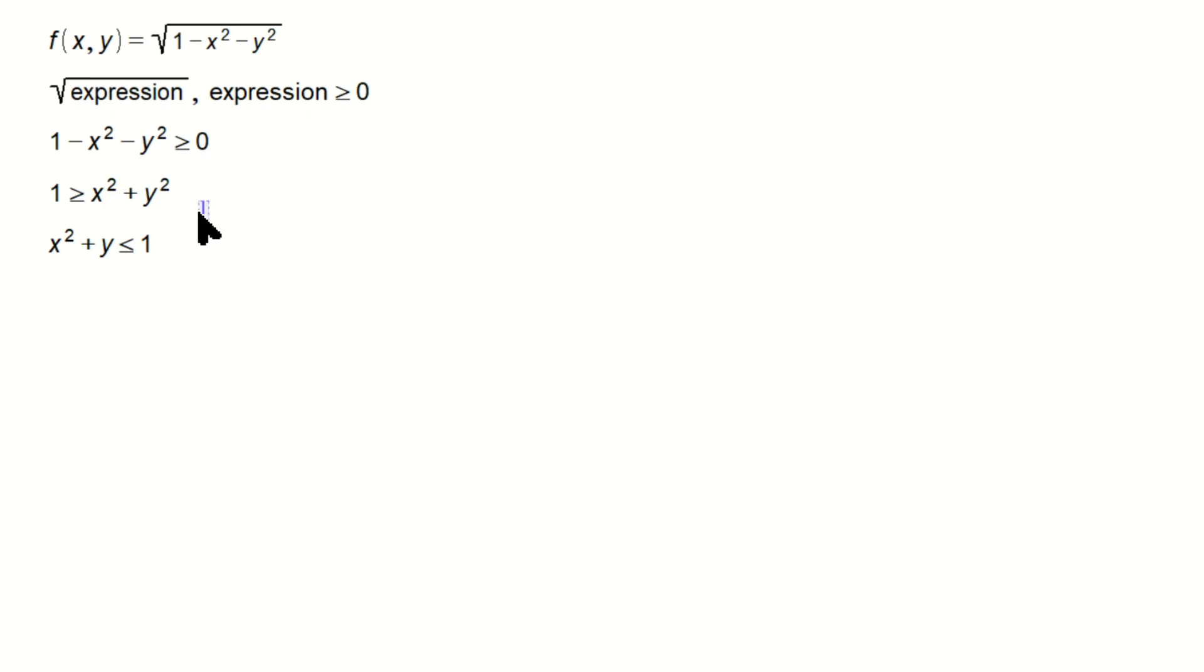So again, this step here, if you say 1 is greater than 0, same as saying 0 less than 1, correct? You can just flip the direction, and this is a square here on the y. So this is the domain. Basically, what this represents is a circle of radius 1 in x, y plane.